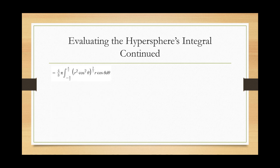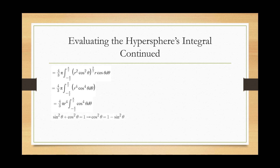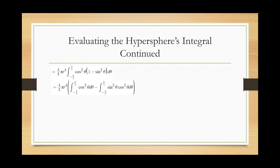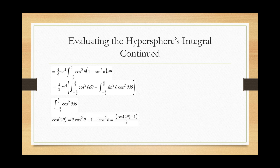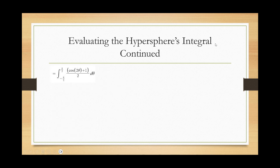After all the simplification and pulling the r⁴ term out of the integral as a constant, the integral reduces to finding the area under cos⁴θ from −π/2 to π/2. This isn't something we can evaluate easily, so we use more trigonometric identities. We apply the Pythagorean identity to rewrite cos⁴θ as cos²θ · (1 − sin²θ), then distribute and split the integral into two parts: one of cos²θ and one of sin²θ cos²θ. Let's solve each separately. For the cos²θ integral, we use the double angle identity to write cos²θ = (1 + cos 2θ)/2, giving an integral that evaluates to π/2.